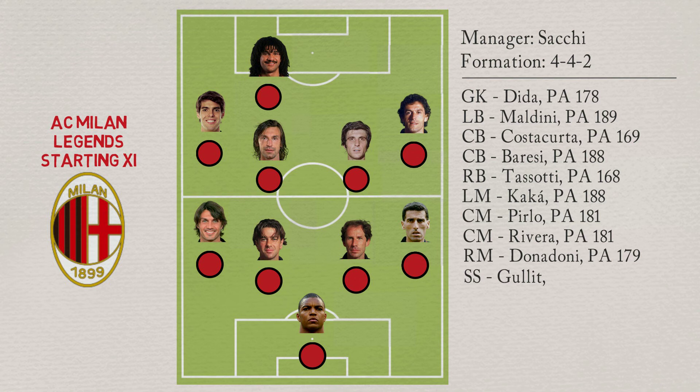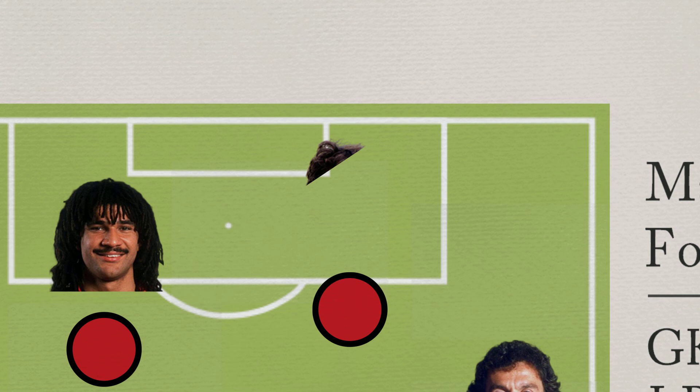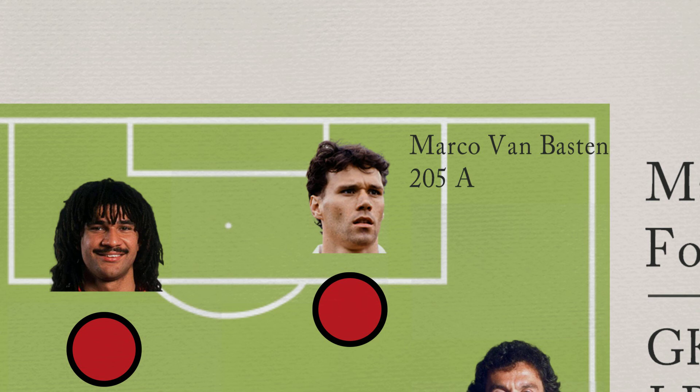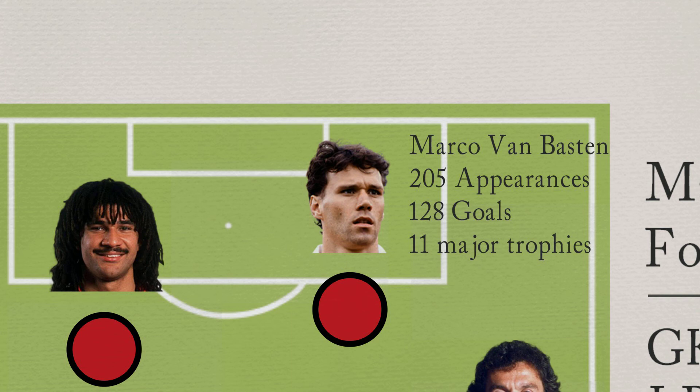The central striker is Marco van Basten. The Swan of Utrecht has played 205 games and scored 128 goals with AC Milan, winning a total of 11 major trophies. Van Basten has a potential ability of 194.